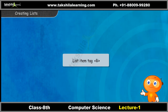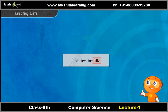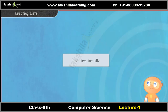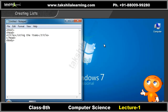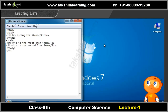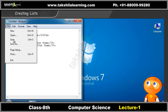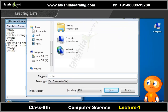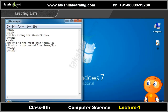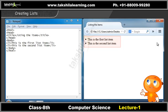The list item tag, LI, helps you to define a list of items. When you use the LI tag by default, the list will be shown as a bulleted list. Take a look at the code. When you execute this code, you will get the output as shown on screen.